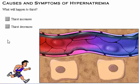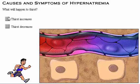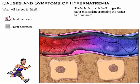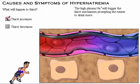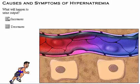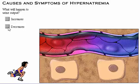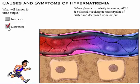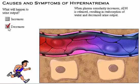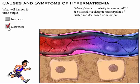What will happen to thirst? The high plasma sodium will trigger the thirst mechanism, prompting the runner to drink more. What will happen to urine output? When plasma osmolarity increases, anti-diuretic hormone is released, resulting in reabsorption of water and decreased urine output.